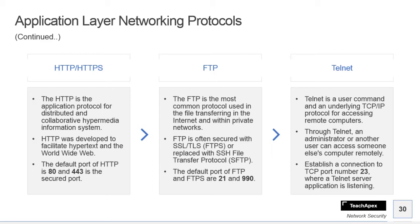FTPS is the secure version of FTP protocol. If you are using plain FTP, that protocol is not secure, so you should use FTPS instead, which uses SSL and TLS technology to secure your data. Alternatively, FTP can be replaced with SFTP — SSH File Transfer Protocol. The secure versions of FTP are FTPS and SFTP. The default port for FTP is 21 and for FTPS it is 990.